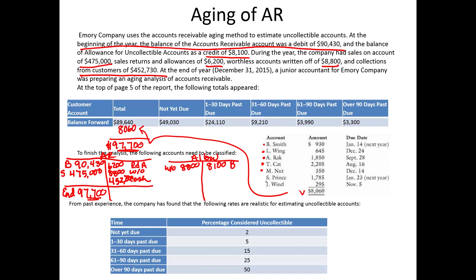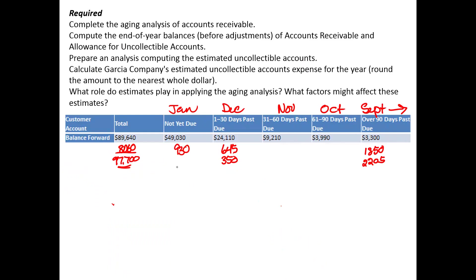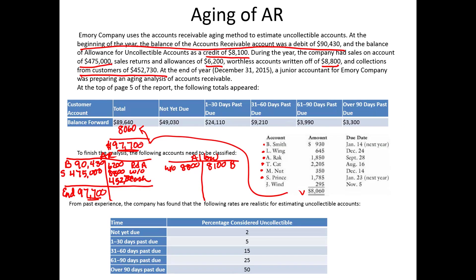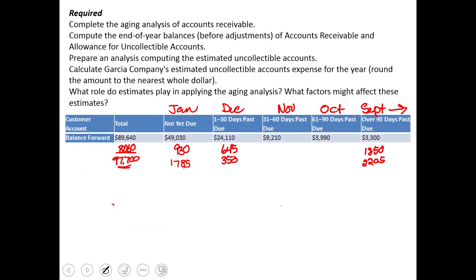S. Prince owes $1,785, due January of next year, so it's not yet due. The last account is J. Wind, $295 due in November, so $295 goes in the 31 to 60 days past due column.